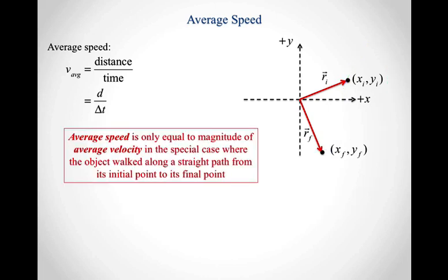So there are situations where the average speed and the magnitude of the average velocity are the same. And you notice that this is one of those things where oftentimes this might mean the magnitude of the average velocity. But with the average velocity, we're going to be very particular. And when we want its magnitude, we're always going to put it in the absolute value symbol because this doesn't have to be the same as the magnitude of the average velocity. In fact, they're only the same in this special case where the object walked in a straight line from its initial point to its final point.